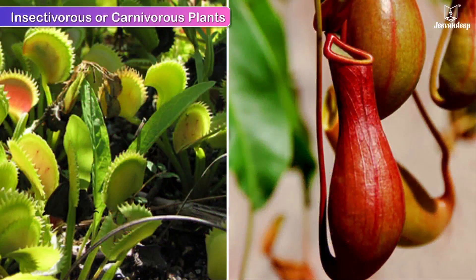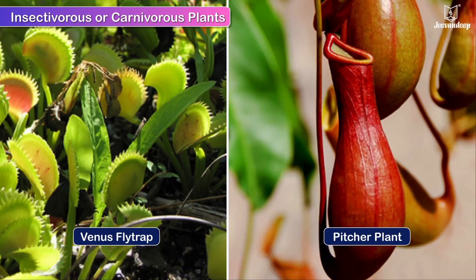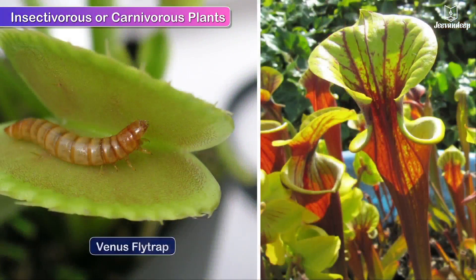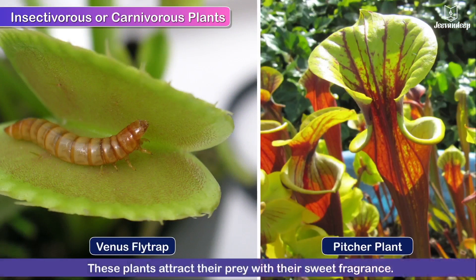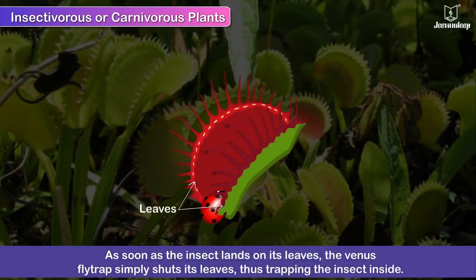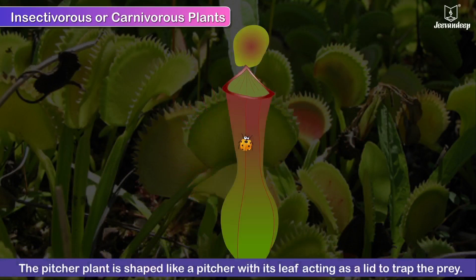Insectivorous or carnivorous plants. Plants that eat insects like spiders, mites and small rodents are insectivorous or carnivorous. They have certain special features that help them trap their prey. The Venus flytrap and the pitcher plant are insectivorous plants. Both attract their prey with their sweet fragrance. As soon as the insect lands on its leaves, the Venus flytrap simply shuts its leaves. The pitcher plant is shaped like a pitcher with its leaf acting as a lid to trap the prey.